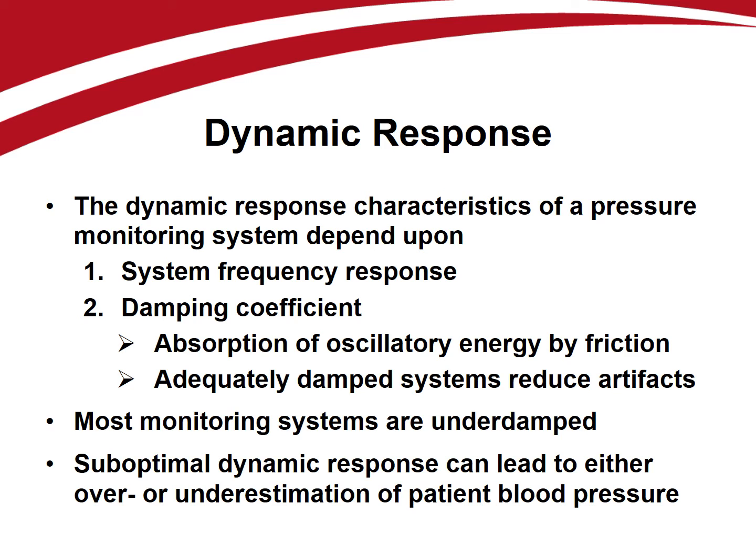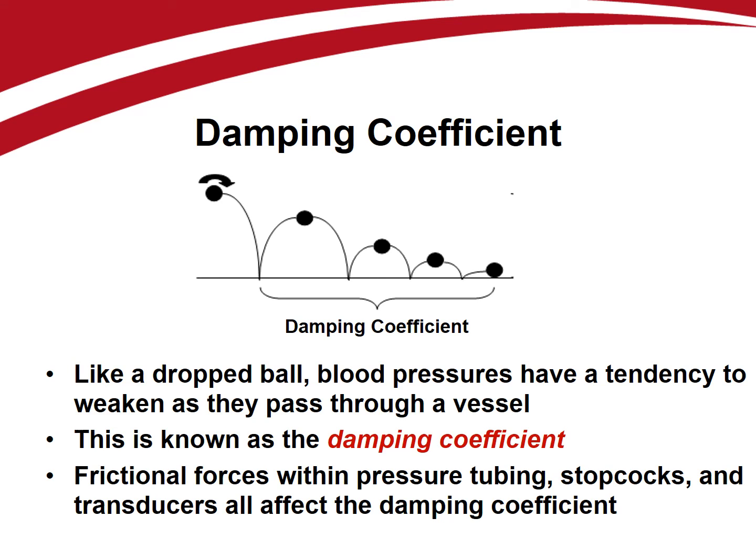Inappropriate damping can lead to over- or underestimation of the patient's blood pressure. The typical catheter-transducer system used in the intensive care unit is considered to be an underdamped, second-order dynamic system, analogous to a bouncing ball. When the ball is dropped onto a hard floor, the ball bounces multiple times before coming to rest, with each successive bounce not rising as high as the previous one. Each bounce has a characteristic frequency and damping coefficient. If the same ball is dropped onto soft earth, the ball will not bounce as high, resulting in a decreased frequency and increased damping coefficient.